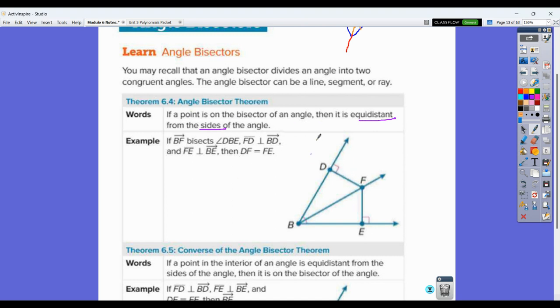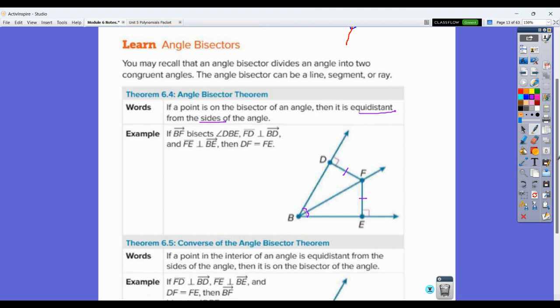So what we know here is that if BF is an angle bisector, which you can see by those two markings down there, then the distance to the sides are congruent to each other. So those would be equal to each other, or equal measures there.